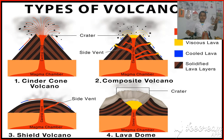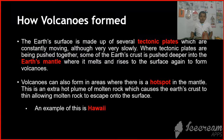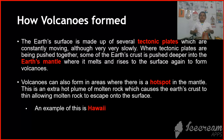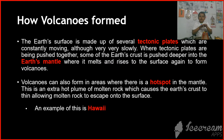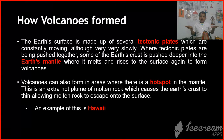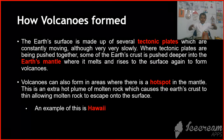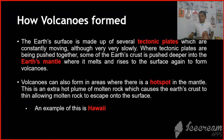Here are the four types of volcano eruptions. Our earth is made up of tectonic plates. Whenever tectonic plates crash into one another, they make volcanoes. When they rub against each other, they make volcanoes. And when they move apart, they make volcanoes.